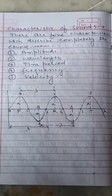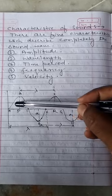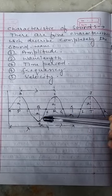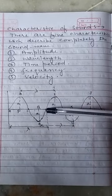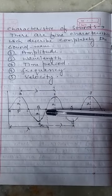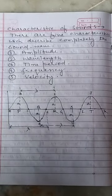Time period: the time taken by a particle of a medium to complete one vibration is called the time period of the wave. From A to E, the time taken is known as the time period. It is denoted by capital letter T, and the SI unit of time period is second.